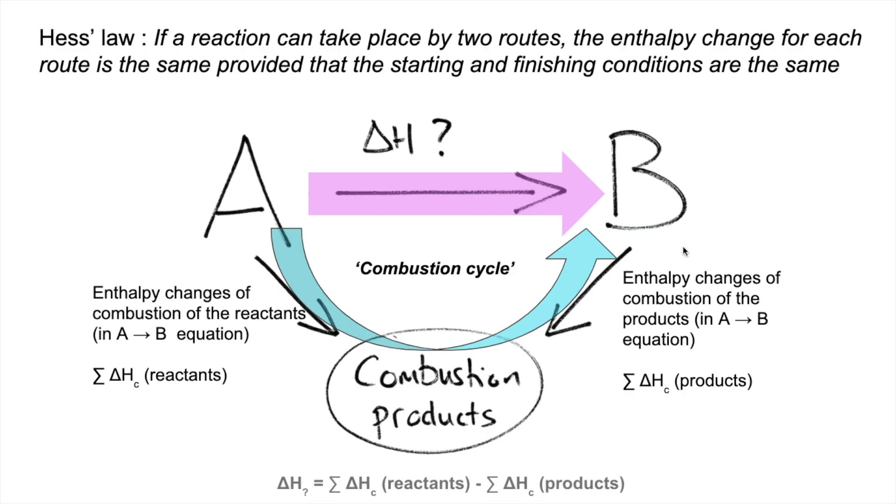The formula we're going to use is delta H equals the sum of the enthalpy changes of combustion of the reactants, remember that arrow is in the right direction, but we're subtracting this one because it's going in the wrong direction, so minus the sum of the enthalpy changes of combustion.